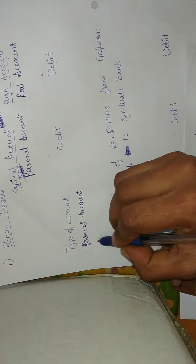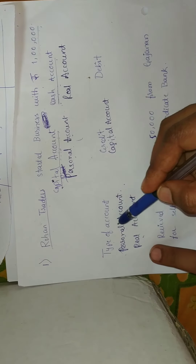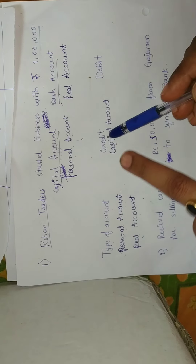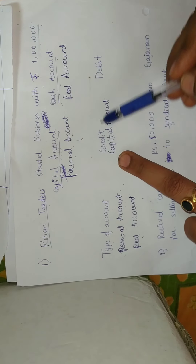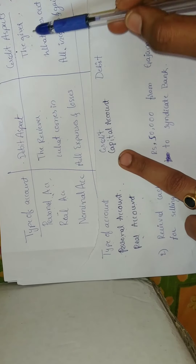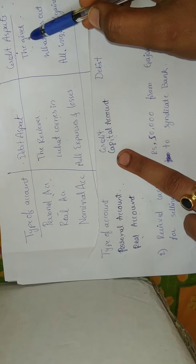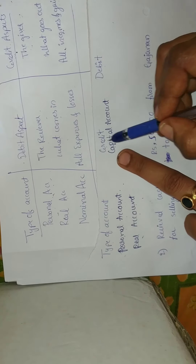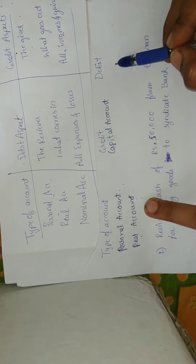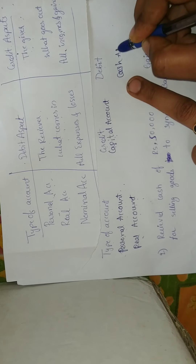We have both accounts: personal account for capital, and real account for cash. For personal account, we check who is the giver — capital is given by the owner or investors, so the giver comes under credit. Therefore, capital account comes under credit. For real account, cash is coming into the business, so what comes in for the business comes under debit. Cash account comes under debit.